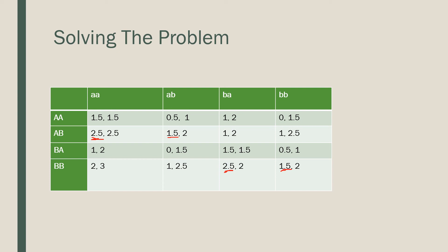Now let's look at it from our column player's perspective. If the row player is committing to A, A, the column player's best response would be B, A. If the row player commits to A, B, the best option is either this one or B, B. If he's committed to capital B, capital A, the best response for our column player would be A, A. And if it's B, B, looking at all options, it is again A, A.